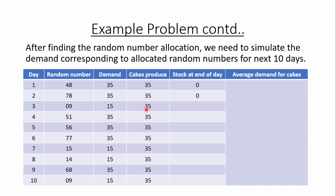For day 4, the bakery produces 35 cakes and demand is 35, so all 35 are consumed. The stock carried forward from day 3 remains 20. For day 5, production is 35 and demand is 35, so all are consumed, and stock remains 20 carried forward. For day 6, similarly, production is 35 and demand is 35, so all 35 are consumed and stock remains 20 carried forward.